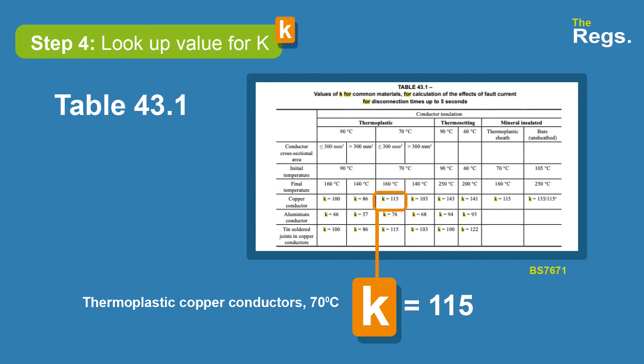Now we look up our value for K. This is table 43.1 in BS7671. We've got a thermoplastic cable, it's a copper conductor, it's 70 degrees C, and it's less than 300 millimetres squared. That gives us the column we want, and the factor for K is 115.